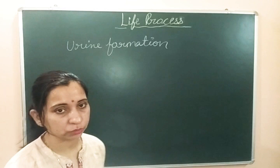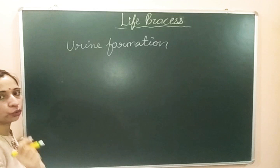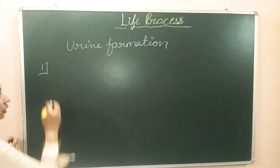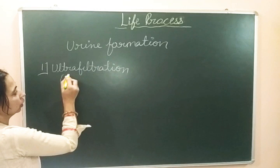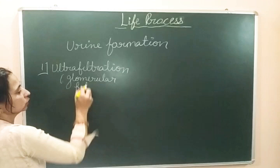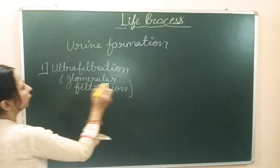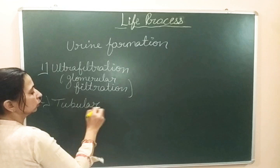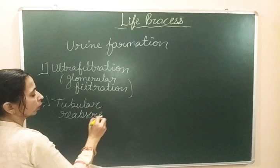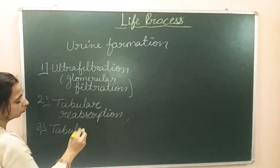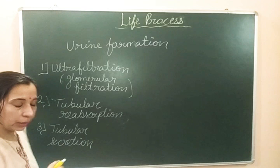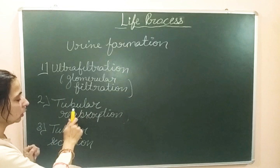Inside the kidney, urine is formed by three important steps. The first step involved in the process of urine formation is ultrafiltration, also known as glomerular filtration. The second step is tubular reabsorption, also known as selective absorption.